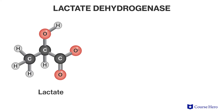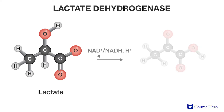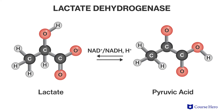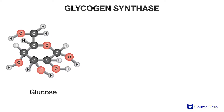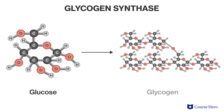Enzymes are typically proteins, and each enzyme is specific to the reaction it catalyzes. For example, the enzyme lactate dehydrogenase converts lactate to pyruvic acid, while the enzyme glycogen synthase synthesizes glycogen from glucose for storage in the liver.